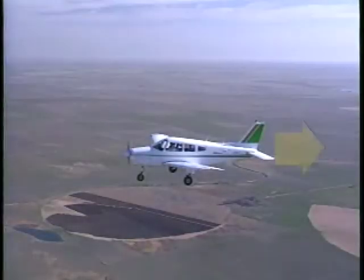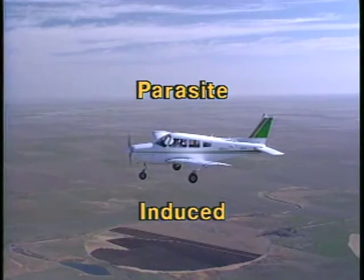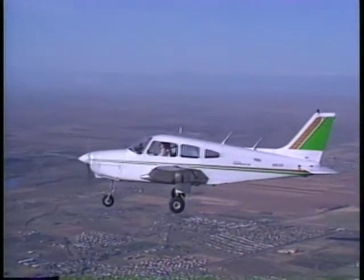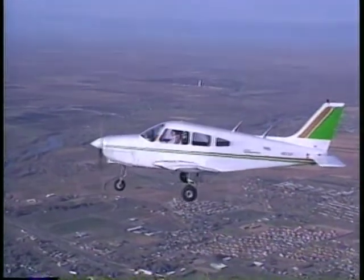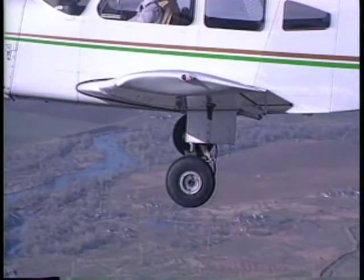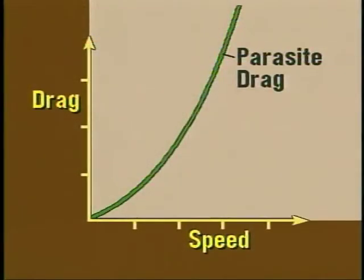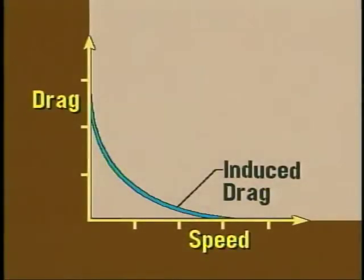The force acting in the opposite direction to thrust is drag. There are two types of drag: parasite and induced. Parasite drag includes all the drag not directly related to the production of lift. It is generated by those areas of the airplane which disrupt the otherwise streamlined flow of air, including items protruding into the airflow such as the landing gear, rough surfaces, and the mixing of air where the wing joins the fuselage. As the speed of an airplane increases, the effects of parasite drag also increase. In contrast, induced drag is a direct byproduct of lift. It is greatest at slow speeds with a high angle of attack. Conversely, at higher speeds and lower angles of attack, induced drag decreases.